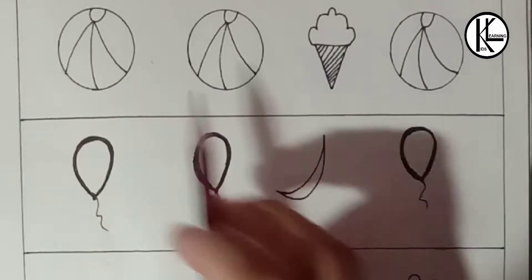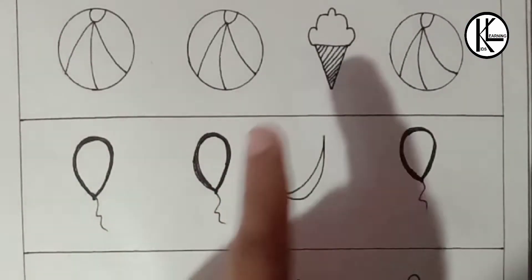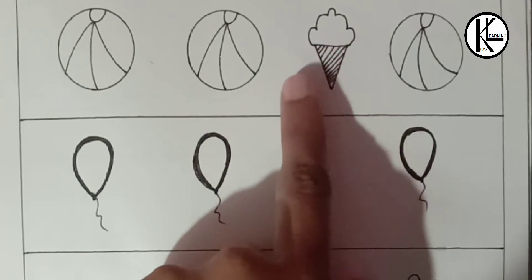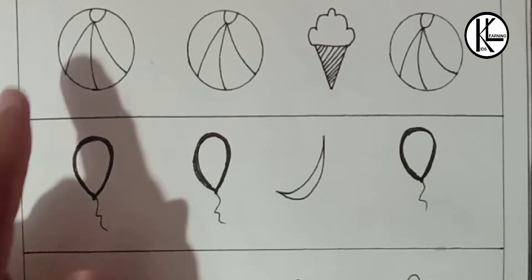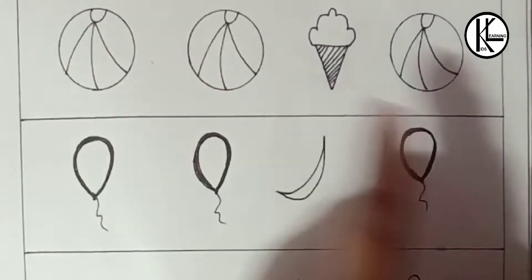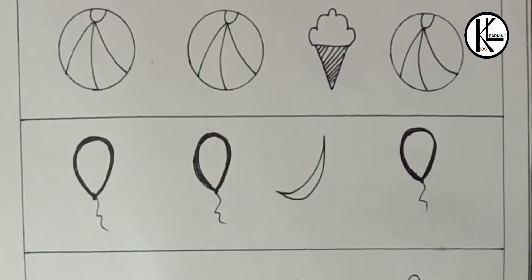In this worksheet you can see there are three similar objects and one is different. It means one is odd. So what kids have to do? Kids have to circle the odd one out.